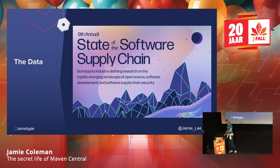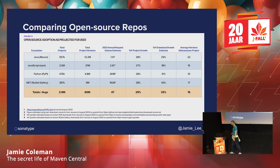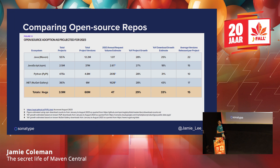Because Sonatype runs Maven Central we have a lot of data — we can see who's downloading what, where they're downloading it from, which regions download certain libraries more or less. One of the things we produce every year is the State of the Software Supply Chain report, which came out a few weeks ago. It has loads of information not just for Java but for the whole supply chain. Java is still very healthy — we may not have as many projects as some ecosystems but our projects are more robust.